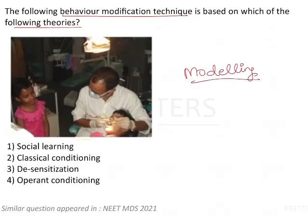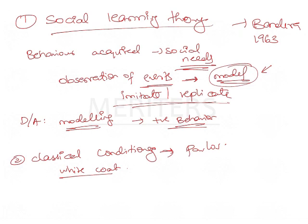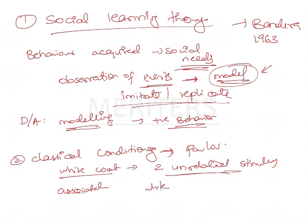The second theory is classical conditioning, which is very famous because of Pavlov's experiment with the dog. This theory helps us understand the white coat phenomenon — it explains how two unrelated stimuli, such as a white coat and pain, become associated with each other.